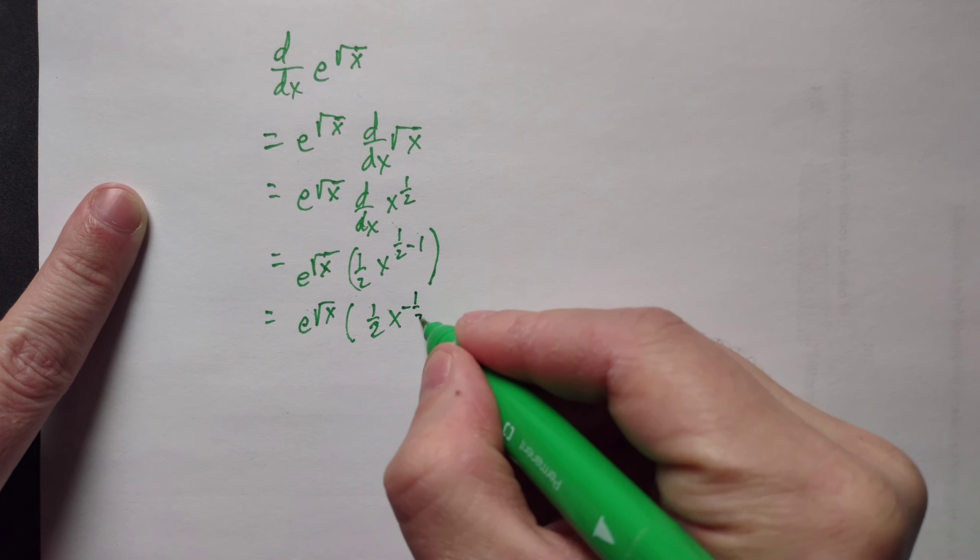So it's e to the root of x, this becomes 1 half x, and this is 1 half minus 1, which is negative 1 half.